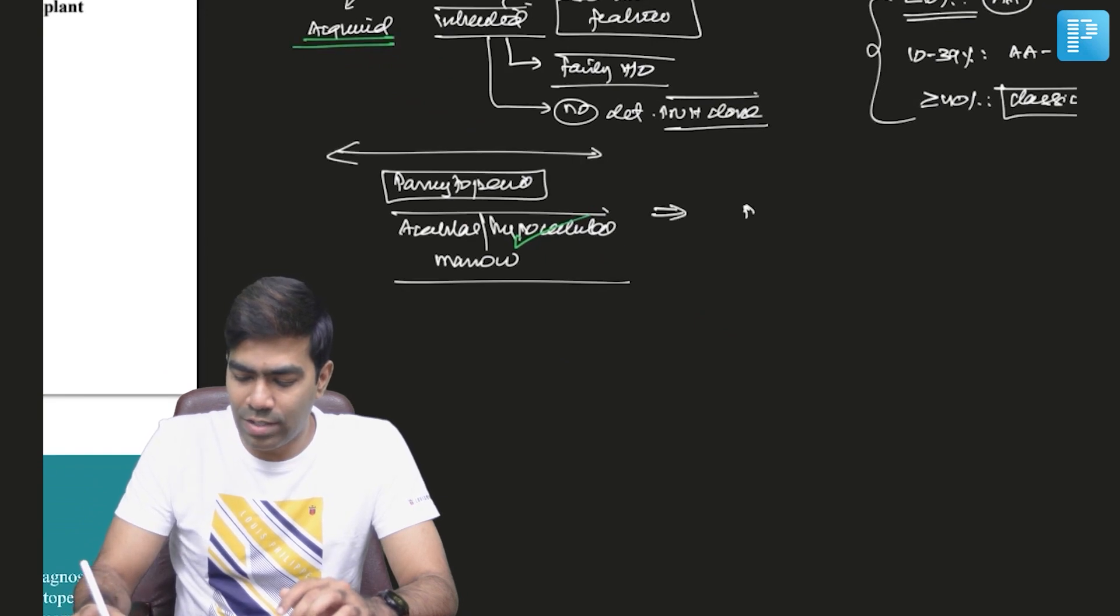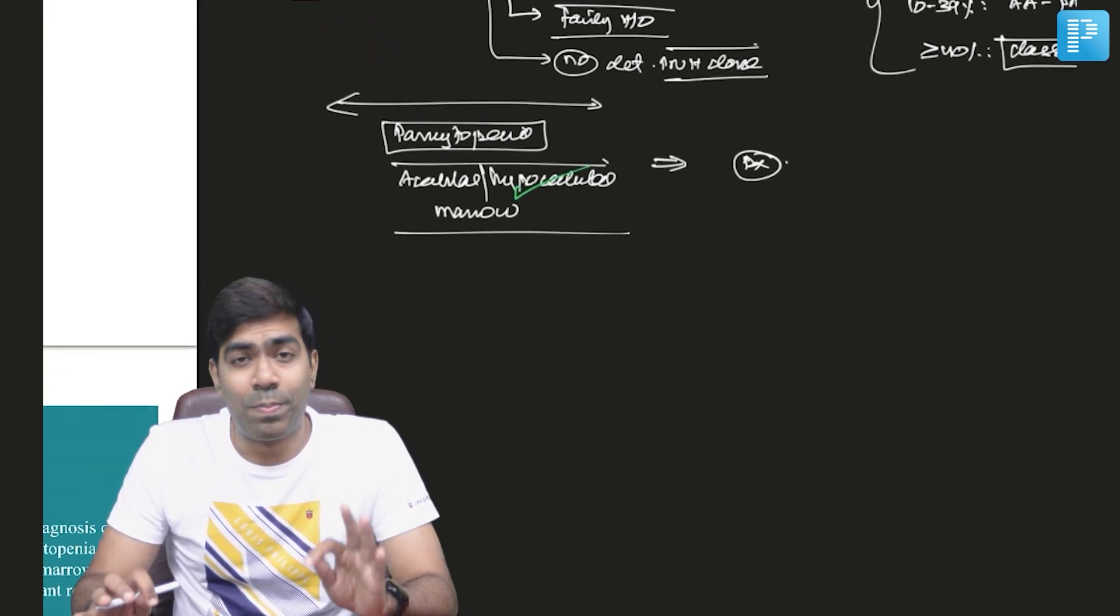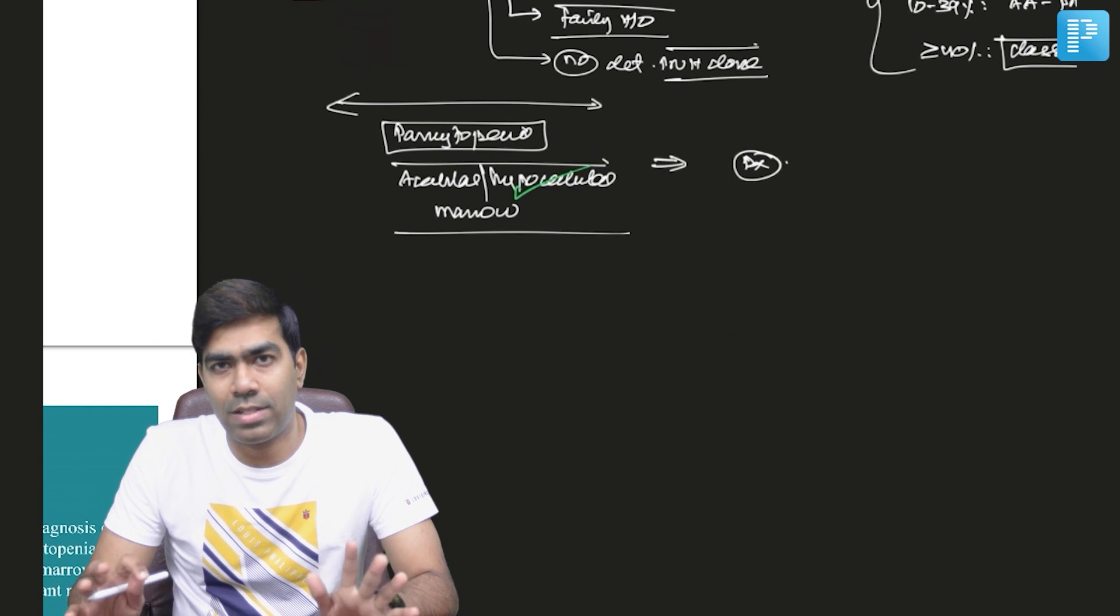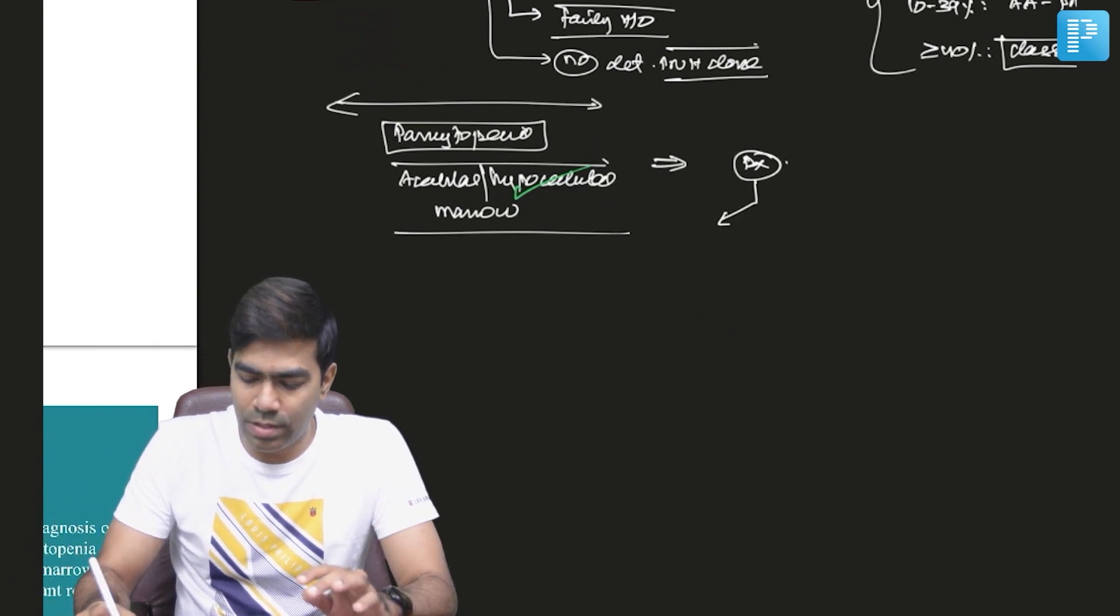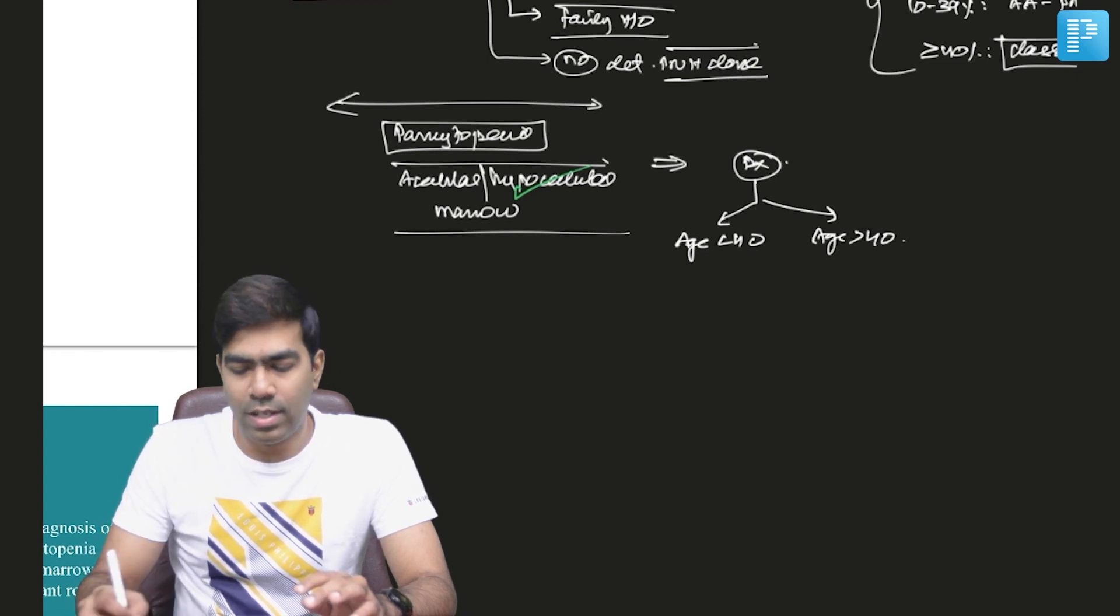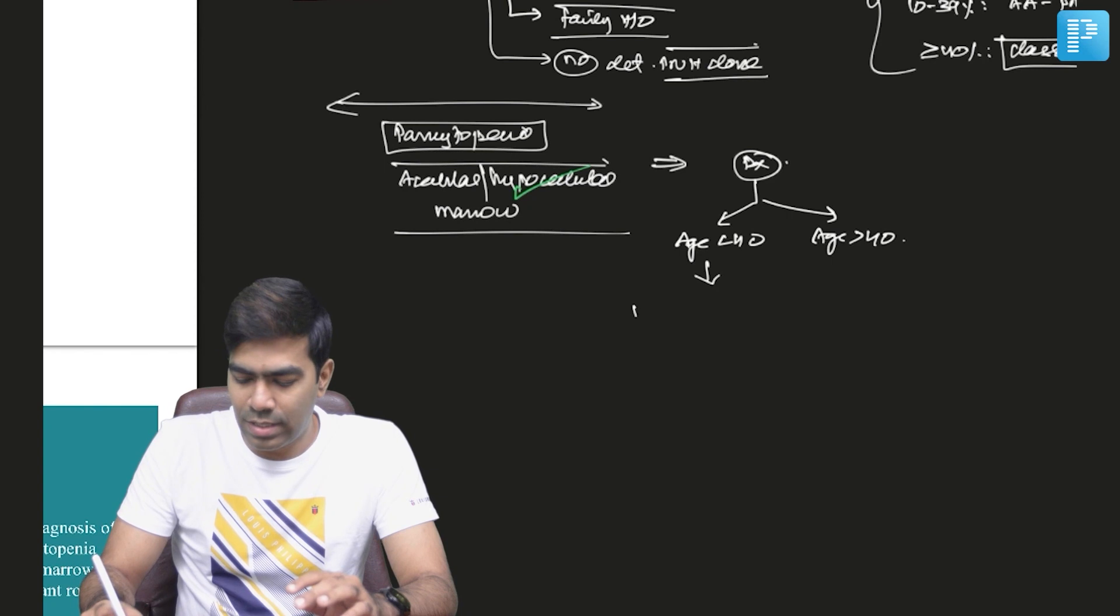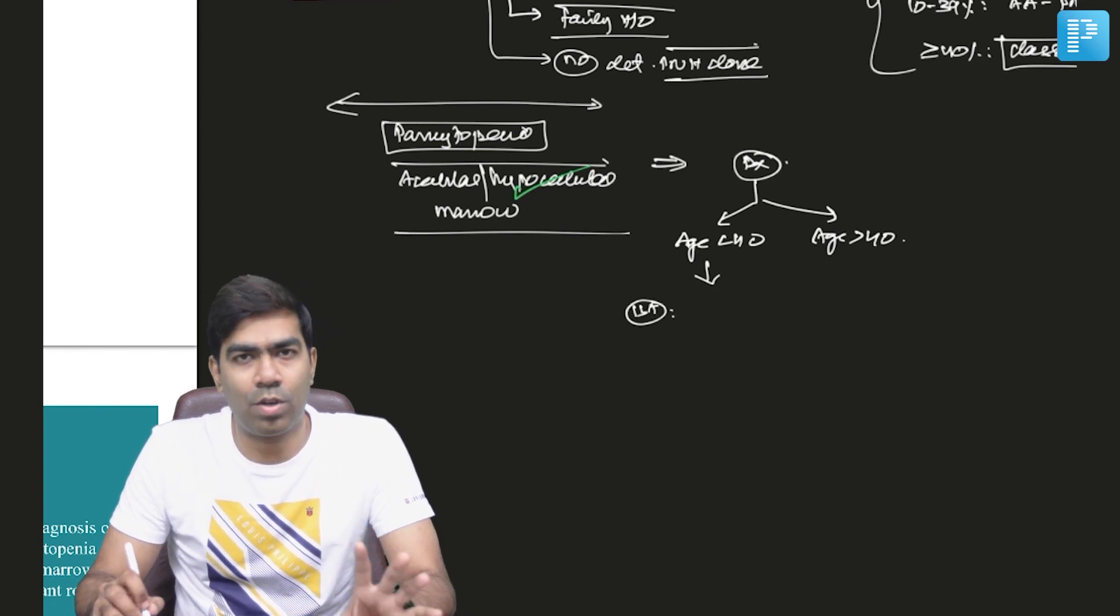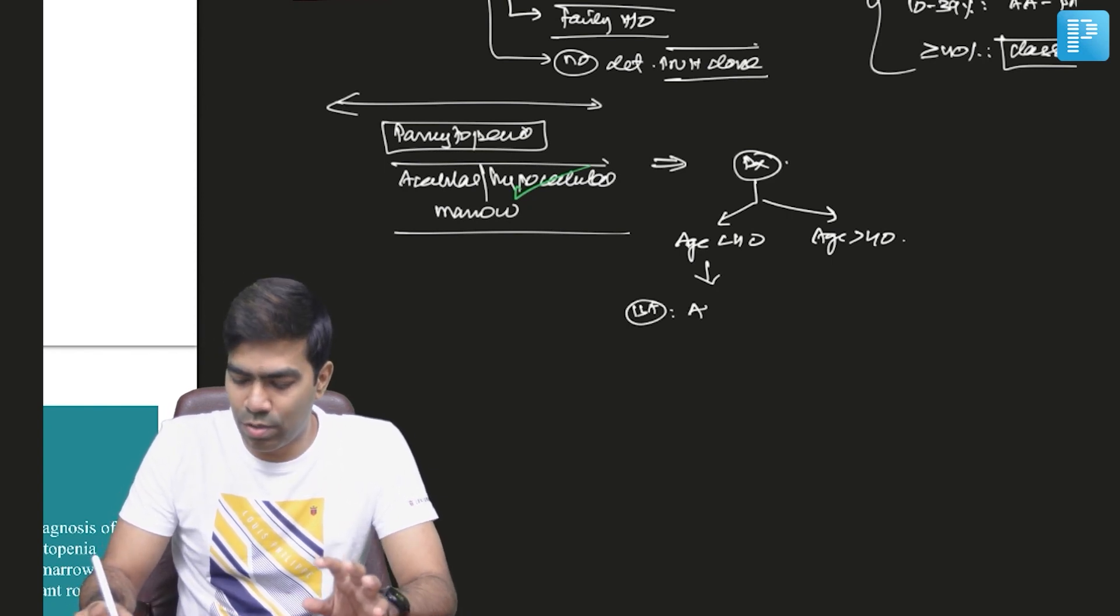And how you're going to treat these individuals? So primary acquired aplastic anemia, how you're going to treat? Look at the age. Where the patient is younger or slightly older. In younger individuals, the primary treatment option, the first line treatment option is going to be allogeneic hematopoietic stem cell transplantation.